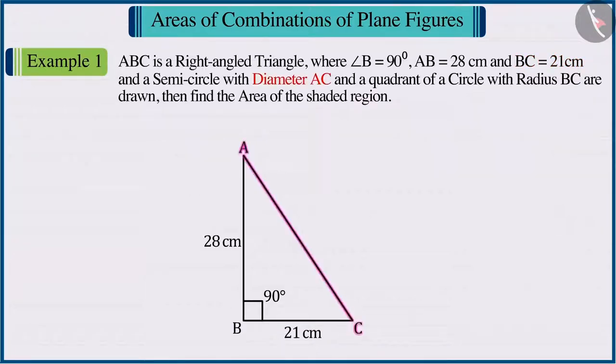And a semicircle with diameter AC and a quadrant of a circle with radius BC are drawn. Can you find the area of the shaded portion?